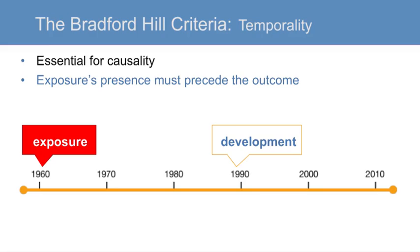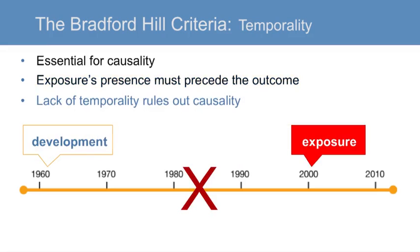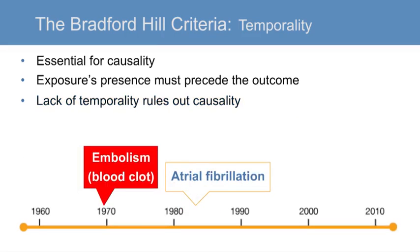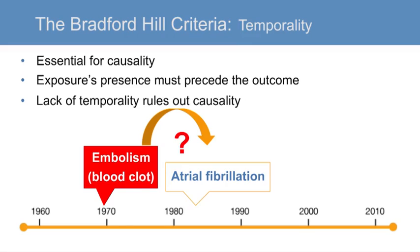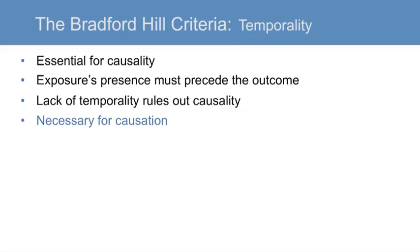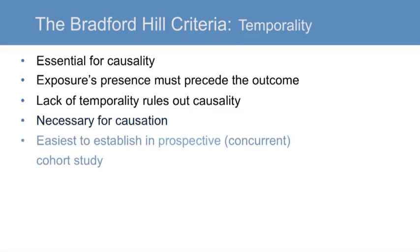Temporality has been identified as the most likely essential element or condition for causality. For an exposure to be causal, its presence must precede the development of the outcome. Lack of temporality rules out causality. One example is the relationship between atrial fibrillation and pulmonary embolism. It is widely thought that pulmonary embolism caused atrial fibrillation; however, more recent evidence and plausible biological hypotheses suggest that the reverse could be true. Determining the proper course of care may hinge upon discovering if pulmonary emboli can indeed precede and thus perhaps cause atrial fibrillation. Temporality is the only necessary criterion for causality, and it is easier to establish a temporal relationship in a concurrent cohort study than in a case-control or retrospective cohort study.